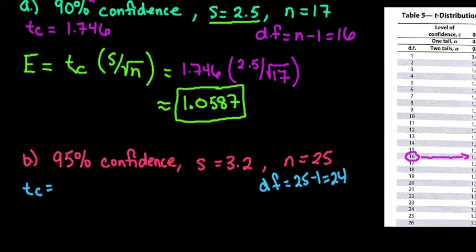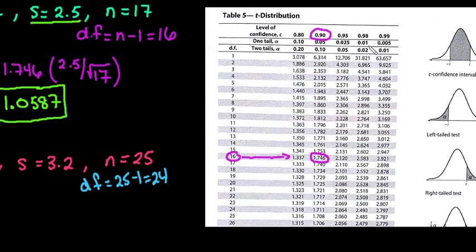So we want to look for 95% confidence this time. So this time we're going to go to 95% confidence. And then we're going to go to degrees of freedom 24. And so we would go down this column here, and we can see that it is 2.064.